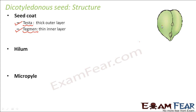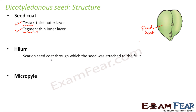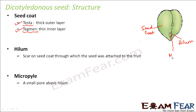The seed coat is a covering of the seed that protects what is inside. Next is hylum — it is a scar on the seed coat through which the seed was attached to the fruit. The seed was originally the ovule present inside the ovary; that attachment point is now left as a scar called hylum. Micropyle is a small pore above the hylum.